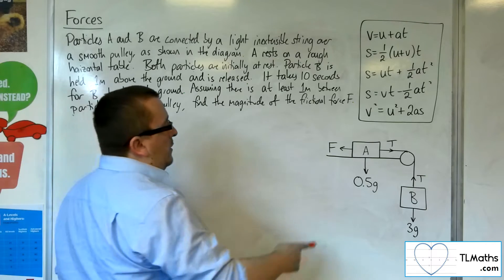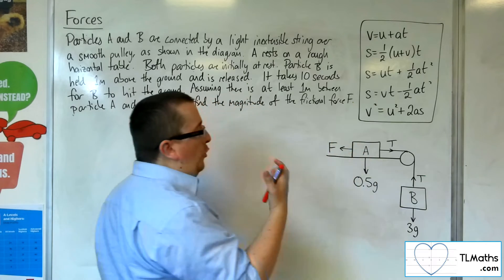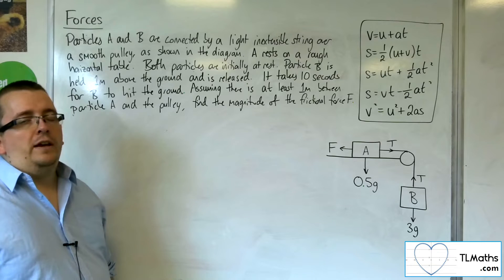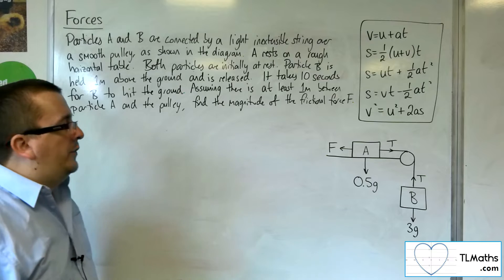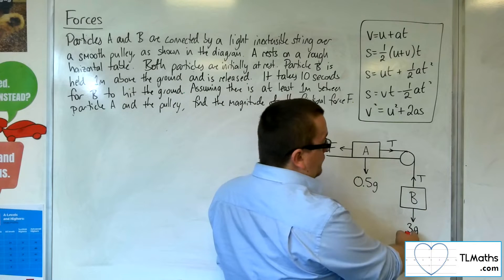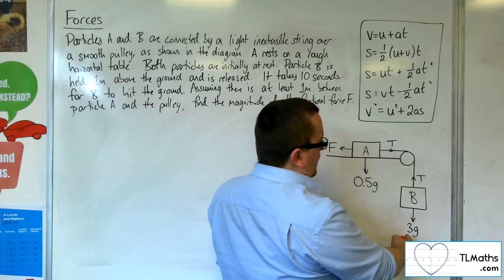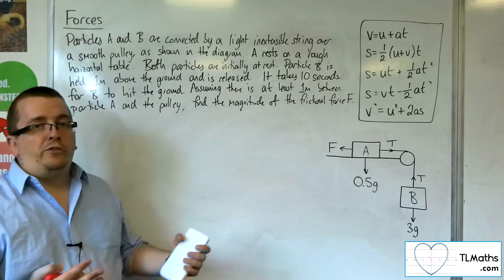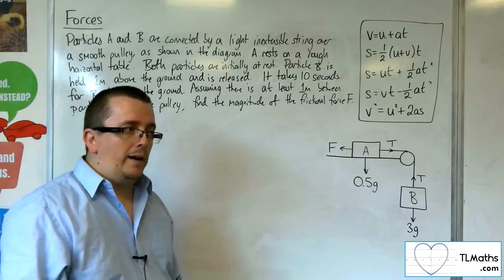So we're trying to figure out what F is in order that B is going to take ten whole seconds to hit the ground. That's the situation that we have. We can see that particle B is three kilos. Particle A is only half a kilo. So ordinarily, if this was a smooth table, then it would rush to the ground very quickly.